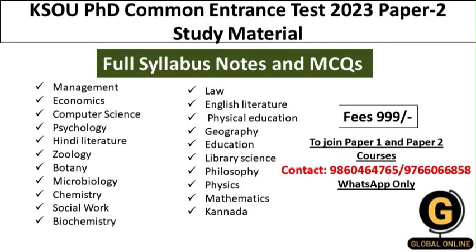We also provide KSOU PhD Common Entrance Test 2023 paper 2 study material so candidates can score more marks in the concerned subject. This includes full syllabus notes, MCQs, most expected and repeated MCQs, and previous year questions. The fees for paper 2 study material are only 999, and we provide guaranteed selection to qualify the PhD Common Entrance Test. To join paper 1 and paper 2 courses, contact through the WhatsApp numbers shown on screen.